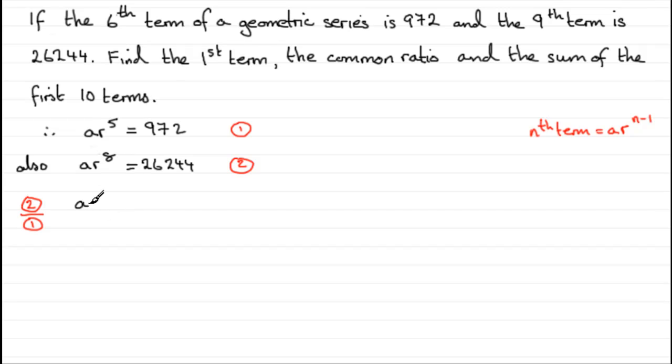If you do that, you've got ar^8 divided by ar^5 equals 26,244 divided by 972. You don't have to put the bigger power on the top, it just makes it easier. You don't even have to do this system of solving. You could make a the subject in each of these and equate them, or even r the subject and equate them. But really, this is the most efficient way of doing this type of equation.